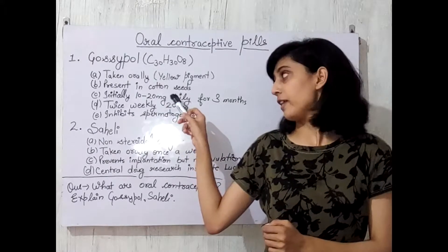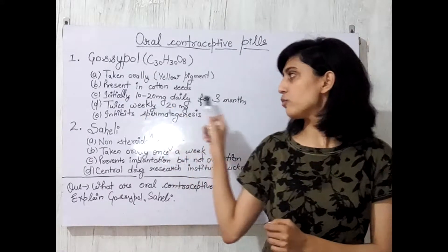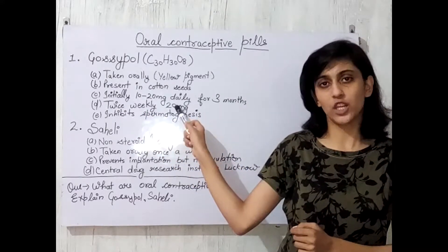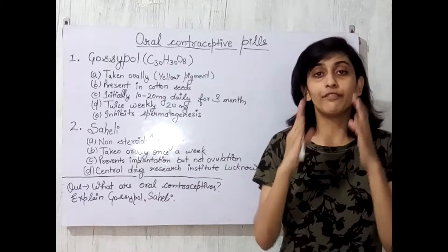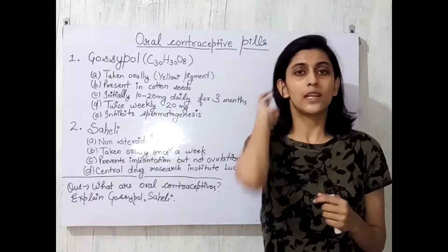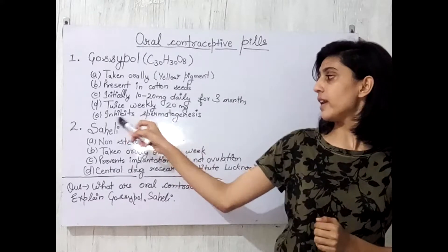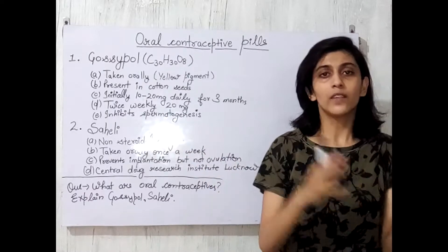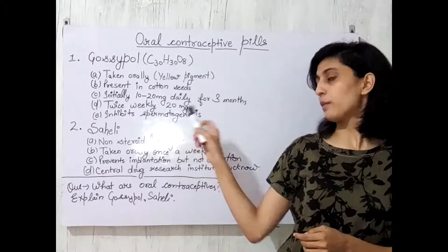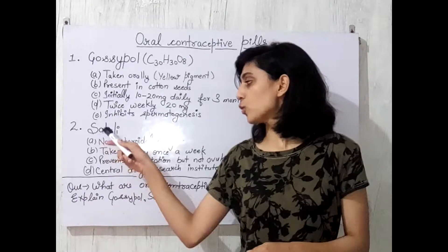we have to take them at an amount of 10 to 20 mg daily for the initial 3 months. After that, we can take them twice weekly at 20 mg each time. The main purpose of this pill is to prevent pregnancy by inhibiting spermatogenesis — no sperm means no fertilization, and no fertilization means no pregnancy. Since it inhibits spermatogenesis, it is clear that gossypol is the contraceptive pill for males.